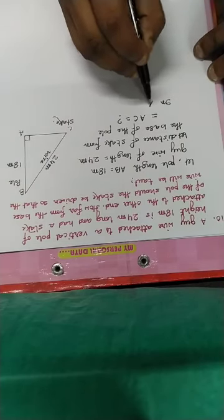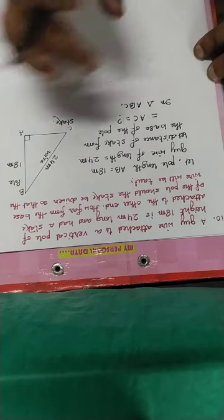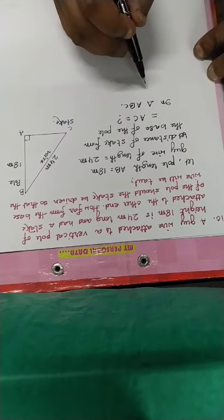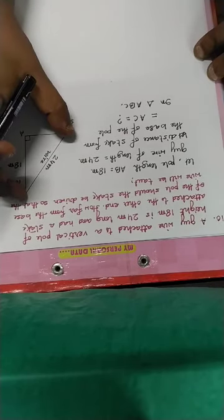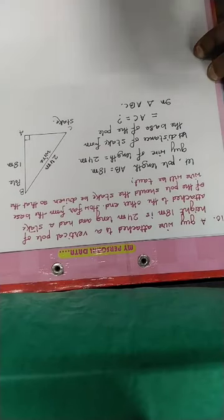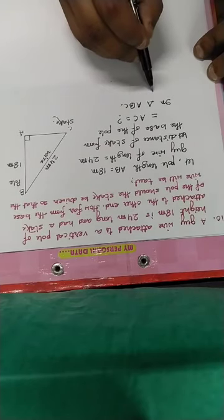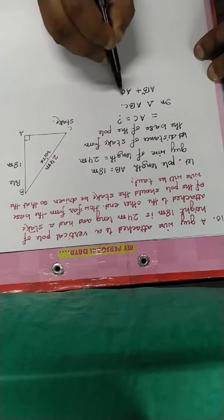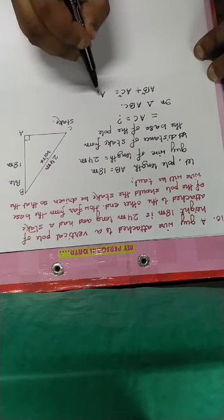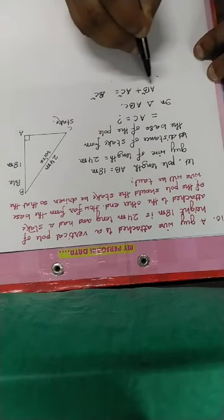Using Pythagoras theorem: AB square plus AC square is equal to BC square.